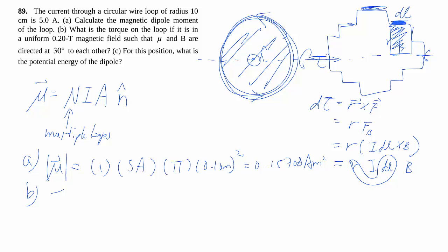As sort of demonstrated in the last question, the torque can be given by the cross product between this magnetic dipole moment and the magnetic field.